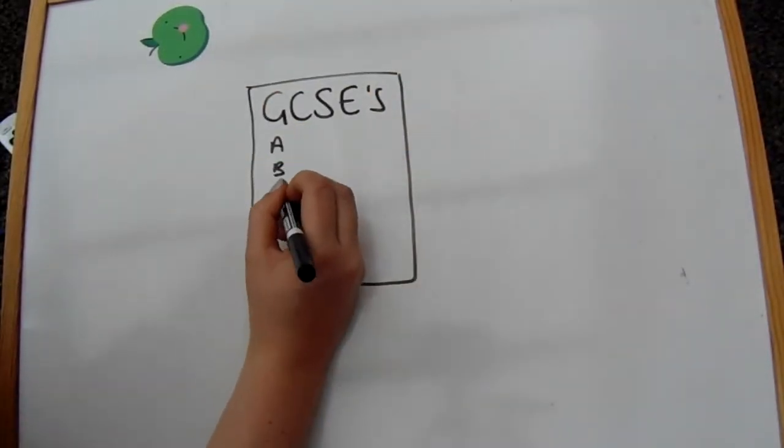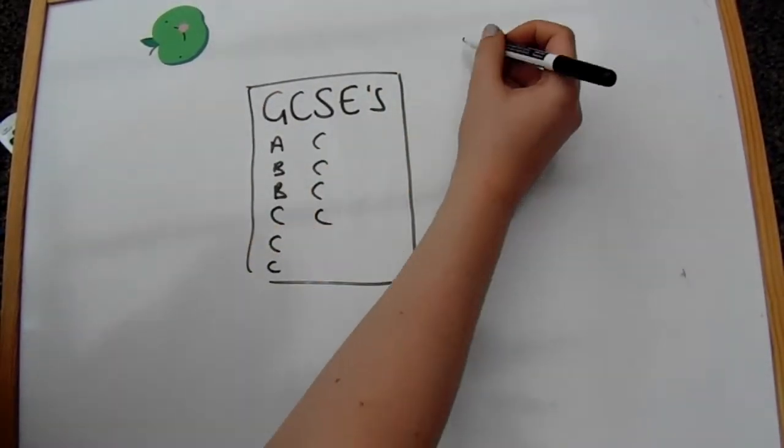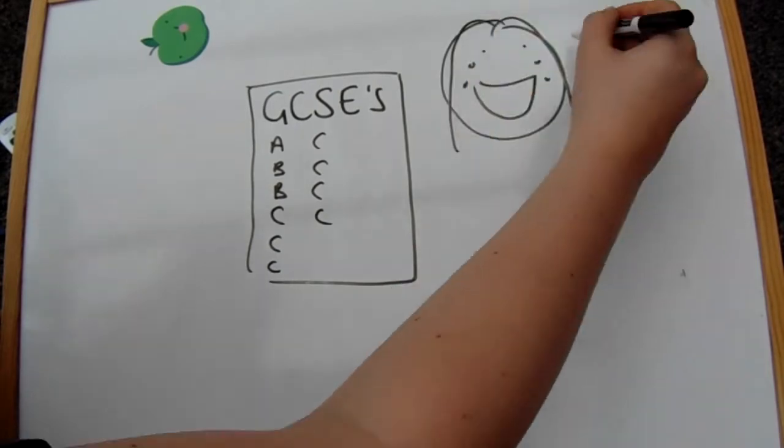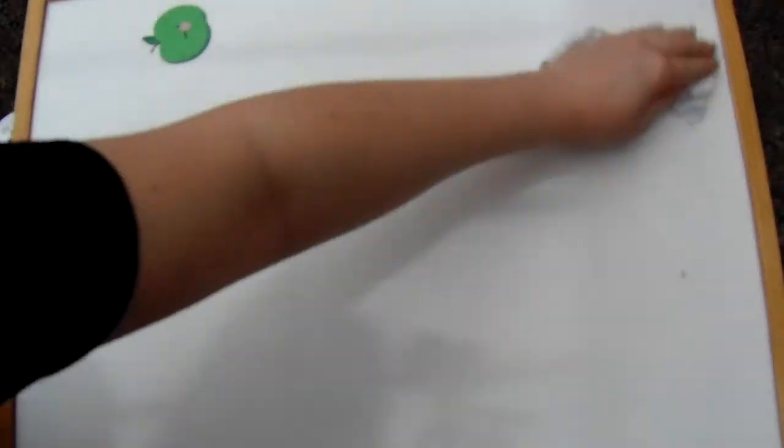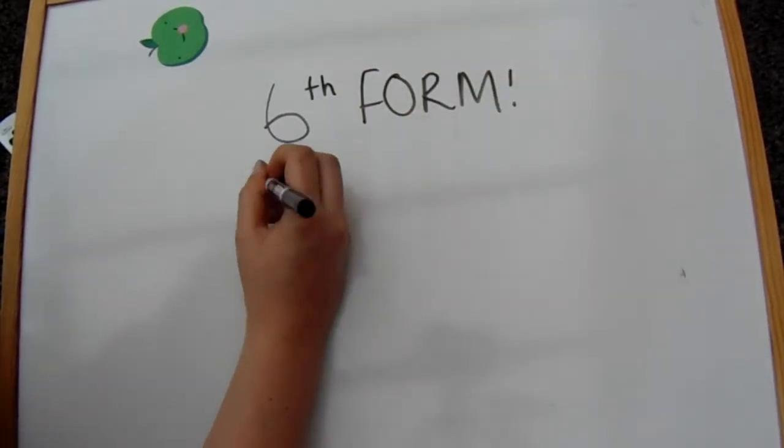So I found the last years of school really difficult because of GCSEs. I just really wasn't sure how well I was going to do but I managed to do really well. I got 11 GCSEs all A to C grade and I ended up going to 6th form.